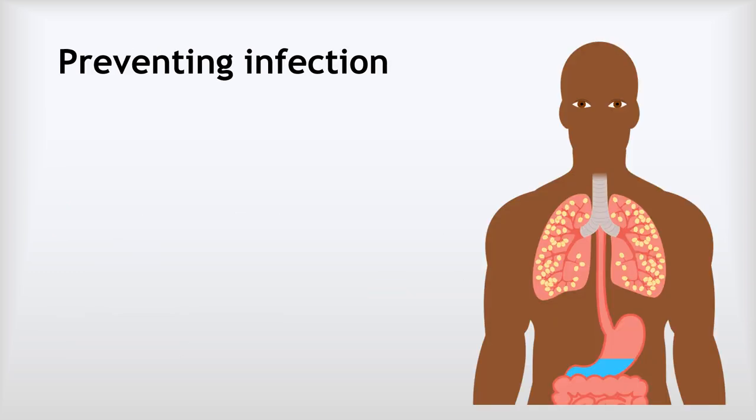Now we're going to look at how we prevent infections. Importantly, this is about preventing infections — so it's not about killing the pathogens that have infected us. It's about stopping the pathogens from entering the body in the first place. The first set of methods we've got for doing this we refer to as the physical barriers.